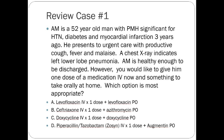Choice A is levofloxacin IV times one dose plus levofloxacin PO. This is actually the correct choice. We want to make sure that we're covering everything, and that's what a fluoroquinolone would do. For community-acquired pneumonia you can use either levofloxacin or moxifloxacin. The only one you can't use is Cipro — it's just not considered a respiratory fluoroquinolone and its coverage of strep pneumo might not be as advantageous.